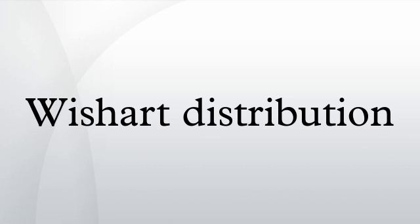If p equals V equals 1, then this distribution is a chi-squared distribution with n degrees of freedom.